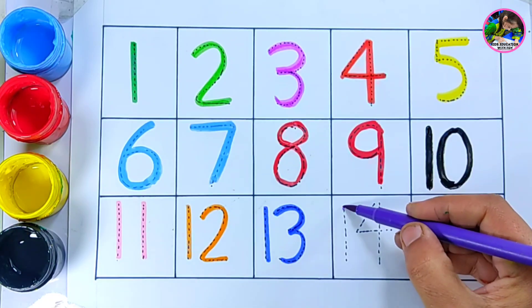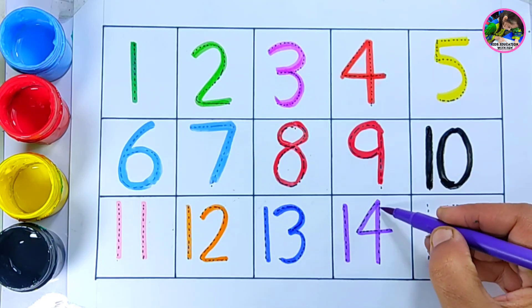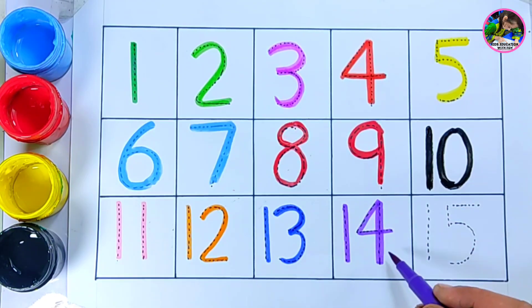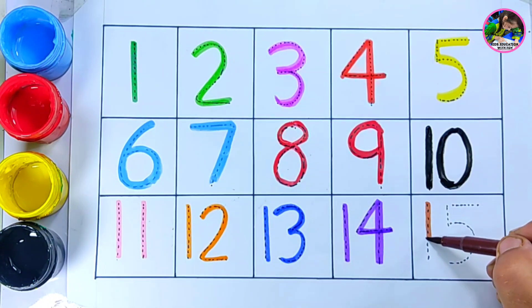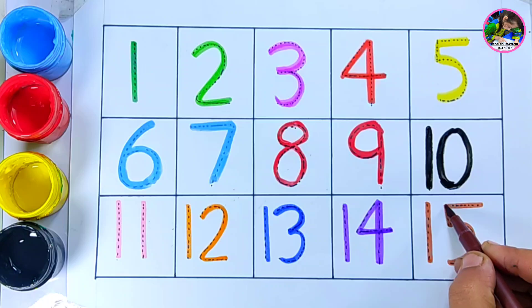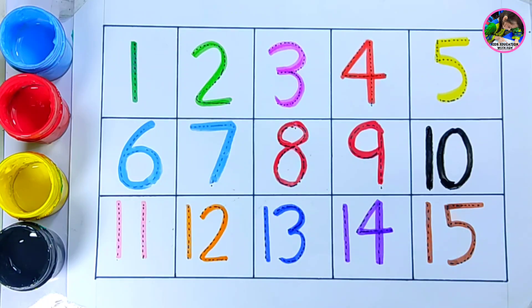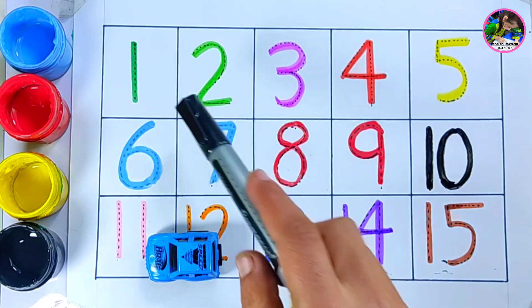Violet color, number fourteen. And here we have brown color, number fifteen. Which color? Yes, brown color. We have done all these numbers, that's great!